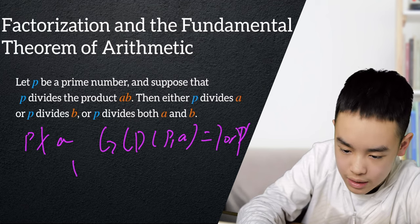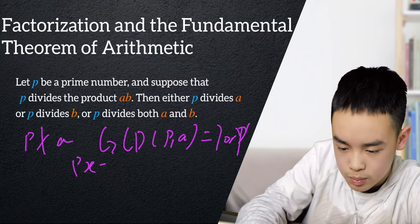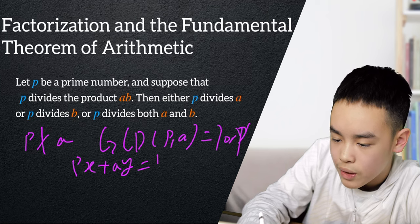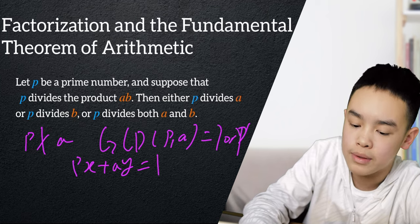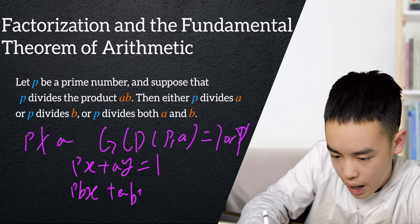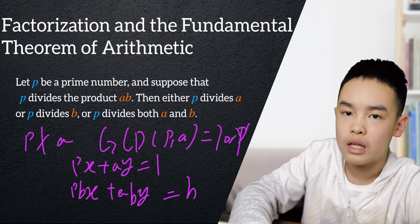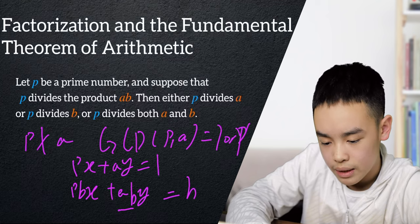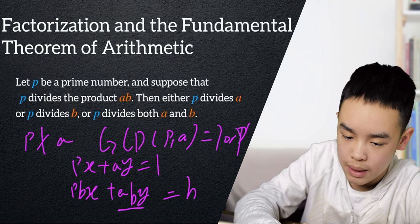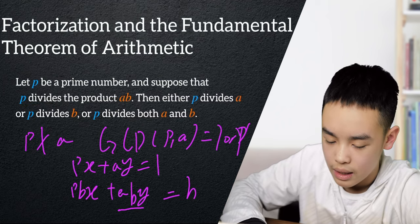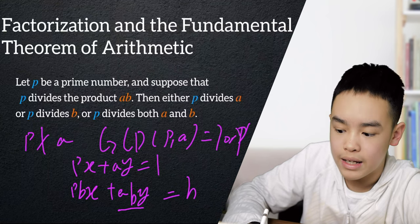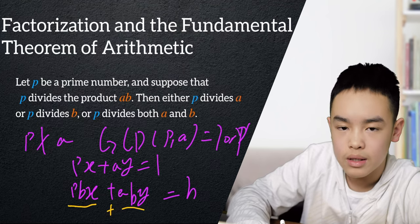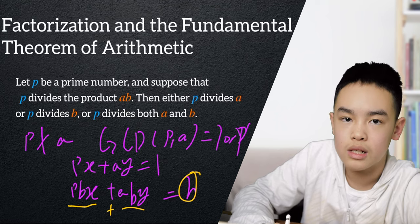And if we do that, we can connect to last lesson and have px plus ay equals 1. And let's now multiply both sides by b to get pbx plus aby equals b. Now it's pretty obvious why p can divide pbx and why p can divide aby. Well, the assumption is that p divides the product ab and ab is over here. So p can divide aby. And if it can divide both these numbers, then p can also divide their sum. And their sum is b. So we have finished the proof.